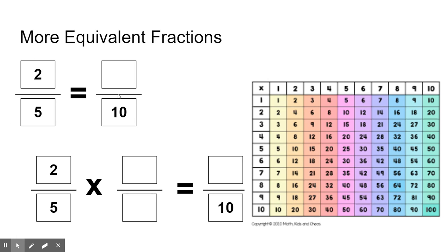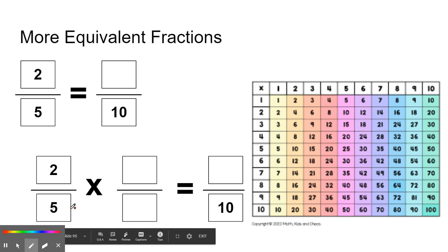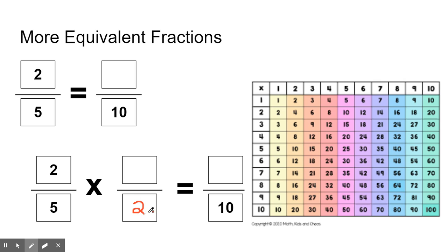We need to get an equivalent fraction for two-fifths that has the denominator of ten. We're wondering: what number did we multiply by five to get ten? If I look at my place value chart and find the five, how many times would I have to multiply five to get ten? Two times — I would have to multiply five by two to get ten. So we're multiplying the five by two, and five times two is ten.